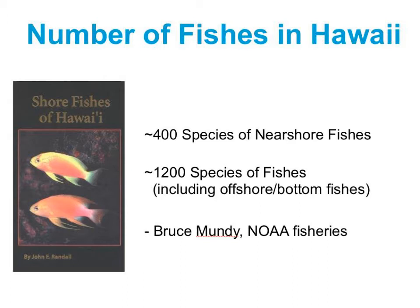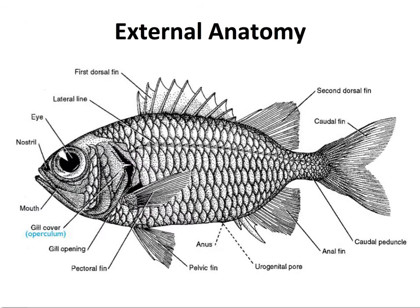In Hawaii we have lots of different species of fishes — around 1,200 overall. Most of these are going to be in marine waters. About 400 species are what we call nearshore fishes — that is, things that are intertidal or on coral reefs and habitats like that.